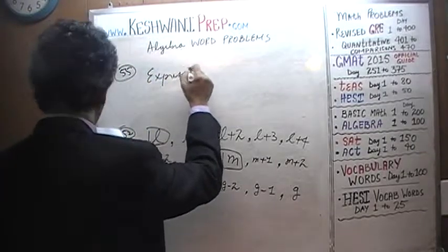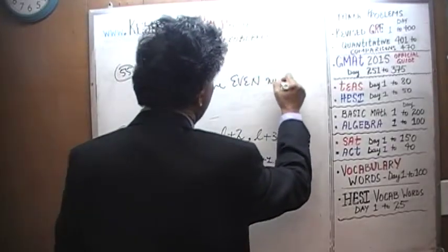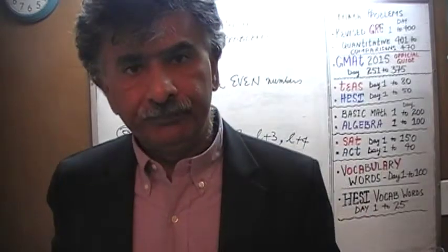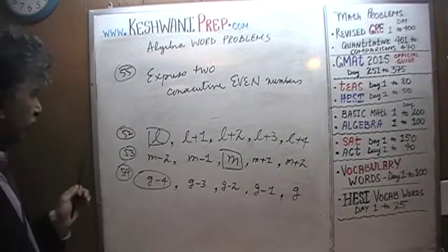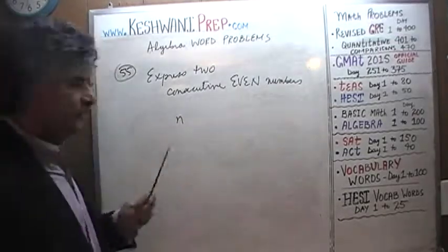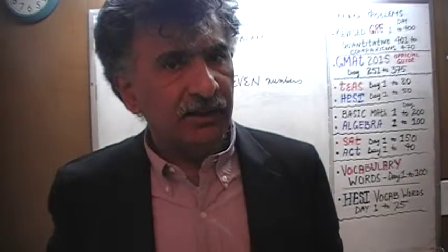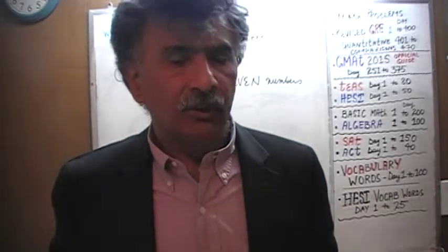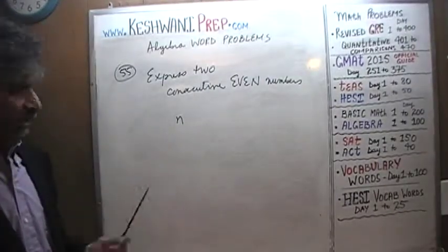Problem 55: express 2 consecutive even numbers. Do you know how to represent the notion of an even number in the language of algebra? We cannot simply say N is an even number because we don't know what N is. In arithmetic we deal with known, concrete numbers; algebra is abstract — we deal with unknown quantities. N represents an integer. We have no idea whether it's odd or even.